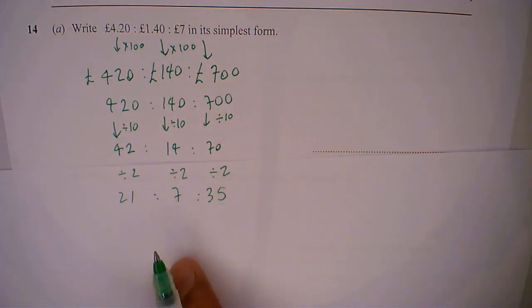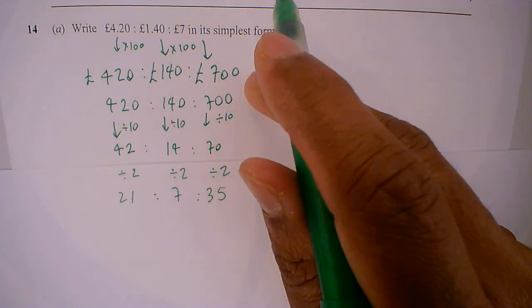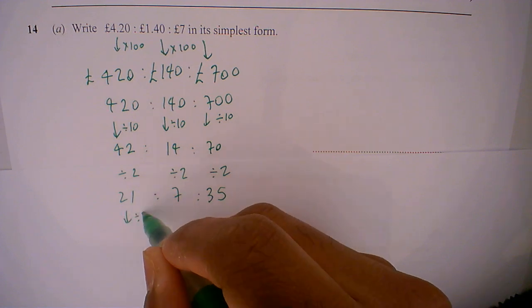Now I look at these numbers. Is there a number that goes into all of them? 7. Does 7 go into 21? It does. Does 7 go into 35? It does. So I'm going to be dividing by 7.